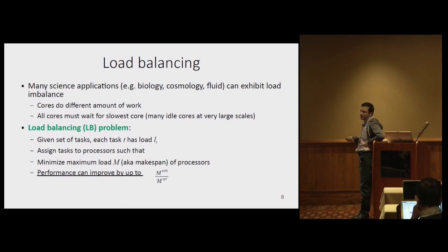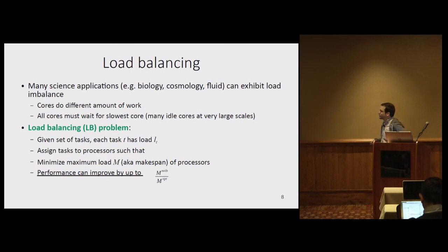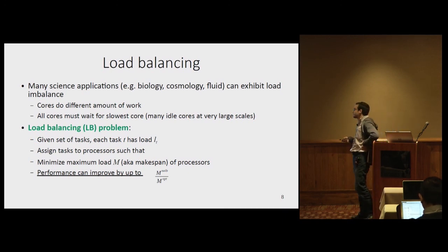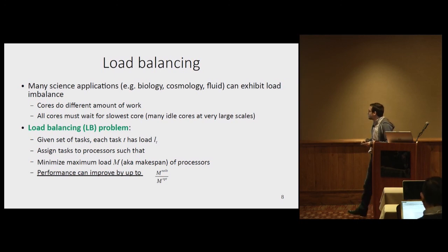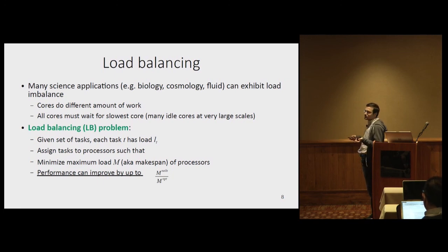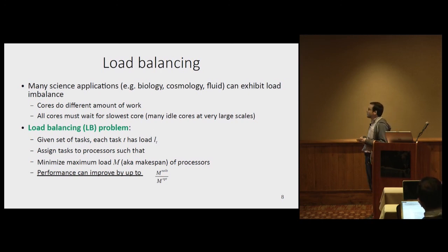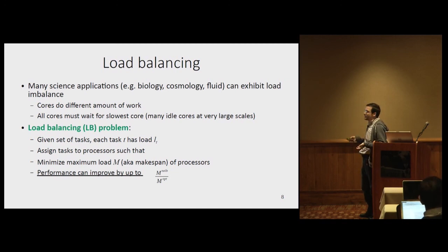Many science applications can exhibit load imbalance, where cores do different amounts of work. Typically, all cores have to wait for the slowest one, which is particularly inefficient on large jobs because a large number of cores end up doing nothing. The load balancing problem: given a set of parallel tasks, each with a specific load, you want to assign tasks to cores in your job allocation so as to minimize the maximum load of any processor. This assumes you have more tasks than cores.